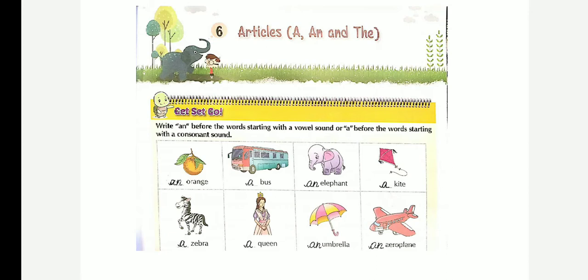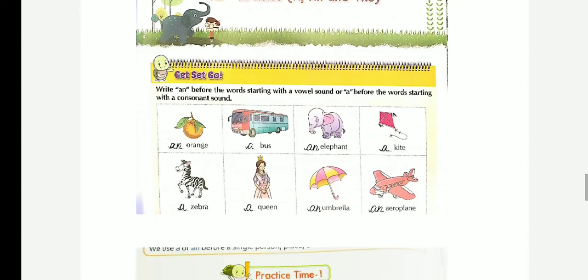Dash orange, an orange. Dash bus, a bus. Dash elephant, an elephant. Dash kite, a kite. Dash zebra, a zebra. Dash raccoon, a raccoon. Dash umbrella, an umbrella. Dash aeroplane, an aeroplane. Okay.